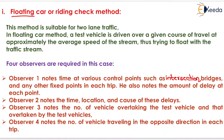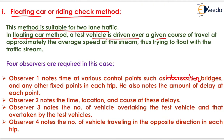We will start with the floating car or riding check method. This method is suitable for two-lane traffic. In the floating car method, a test vehicle is driven over a given course of travel at approximately the average speed of the stream, thus trying to float with the traffic stream.